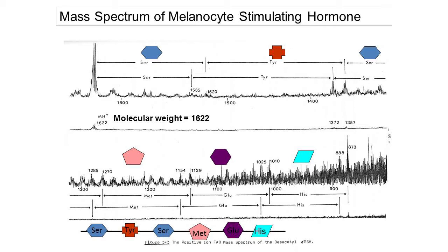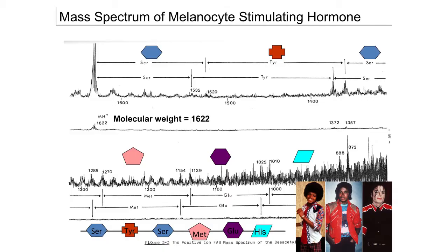I then left science for a while and had a career break with my three children. When I came back to science the web had taken off, so I thought I'd Google the hormone to see if anyone really cared about it. All of the hits I got were to Michael Jackson, who had allegedly used something like this hormone to affect his own whitening process. We have to say allegedly because I'm not sure if it's true. But that's the history of my PhD.